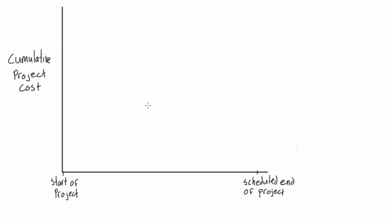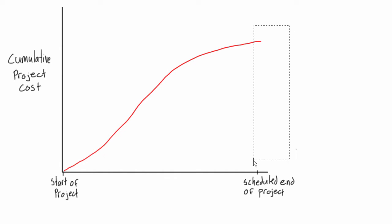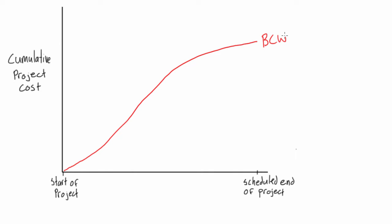If you recall from the previous videos when we were doing our baseline S-curves, it's just a cumulative project cost over the duration of the project. We generally find a trend where we get some curve that levels out at the end, lining up with the scheduled end of our project. This cumulative cost from our S-curves is also what we call BCWS in earned value analysis.